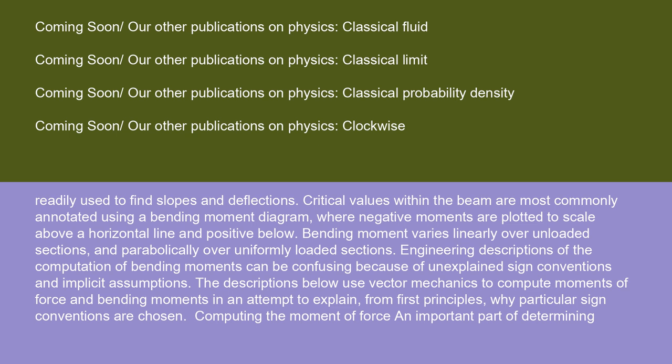Critical values within the beam are most commonly annotated using a bending moment diagram, where negative moments are plotted to scale above a horizontal line and positive below. Bending moment varies linearly over unloaded sections and parabolically over uniformly loaded sections.